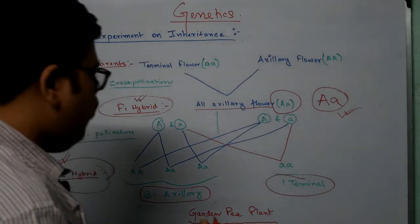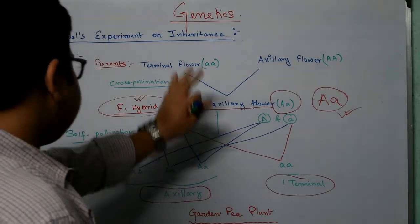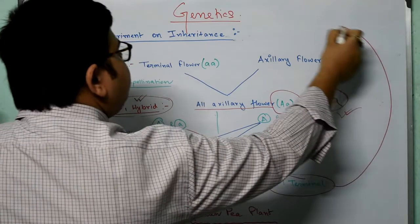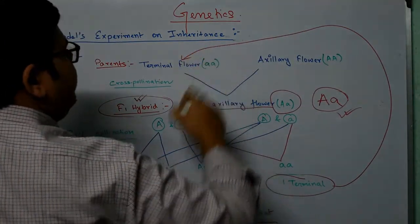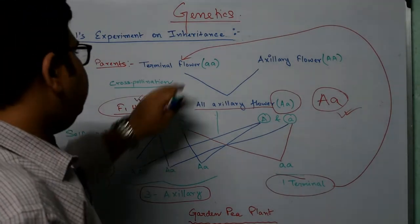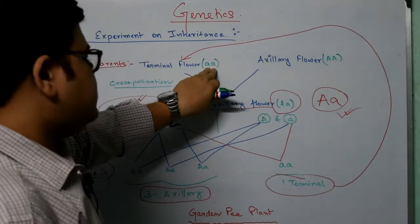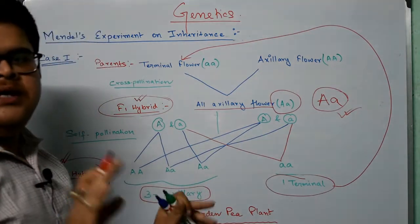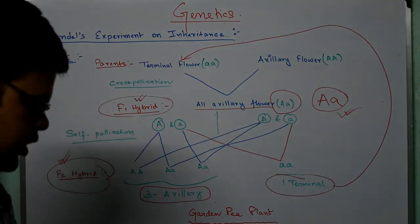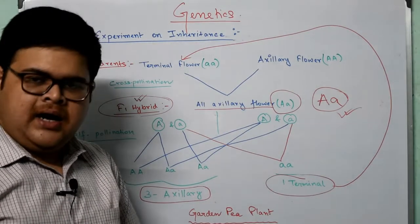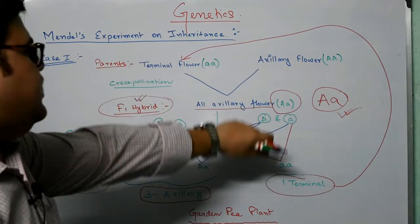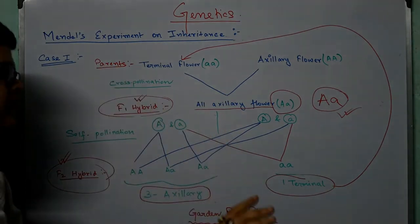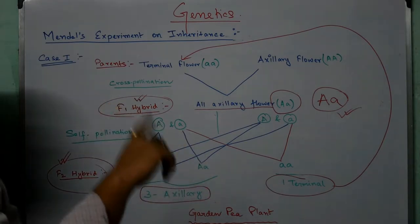From this we can conclude that in the F2 generation, one terminal flower appeared — which came from the original parent generation. The small 'a' characteristic was inherited into the F2 generation. When terminal flower and axillary flower are cross-pollinated, the F1 result is all axillary flowers with genotype Aa (one capital A, one small a). After self-pollination of F1, we get three axillary-bearing plants and one terminal-bearing plant in F2.